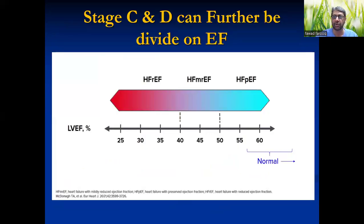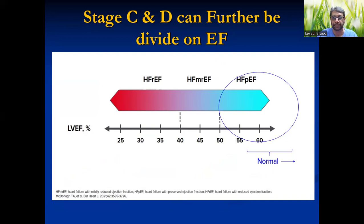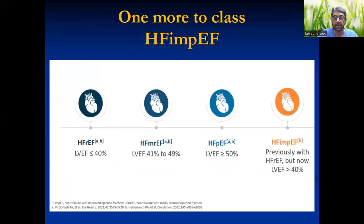Then, according to ejection fraction, you have reduced ejection fraction, mildly reduced ejection fraction, and preserved ejection fraction — cut-off marks of less than 40, 40 to 50, and greater than 50. One more class coming up alongside HFrEF and HFpEF: mildly reduced EF is HFmrEF, and HFimpEF — that is, previously had some LV dysfunction and presently the function has improved.